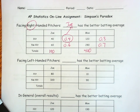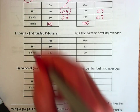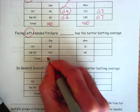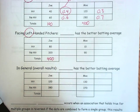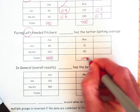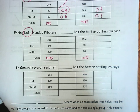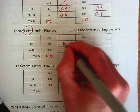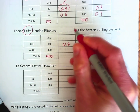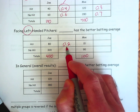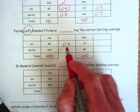So let's look at the data for left-handed pitchers. Joe takes a total of 400 at-bats against left-handed pitchers. Mo only has 100 at-bats against left-handed pitchers. So let's look at their conditional distributions. The 80 out of 400 is 0.2 — comparing hits to total at-bats, Joe's batting average is now 0.2 against left-handed pitchers.